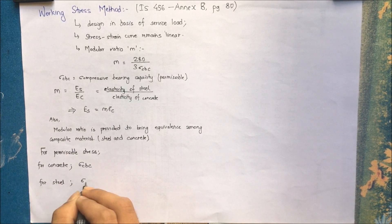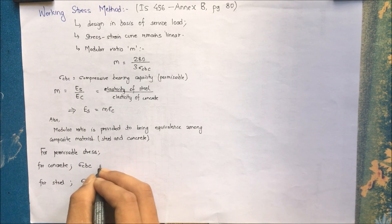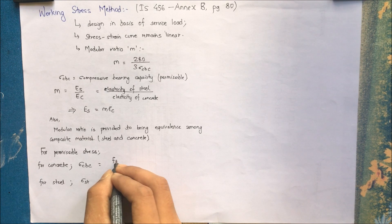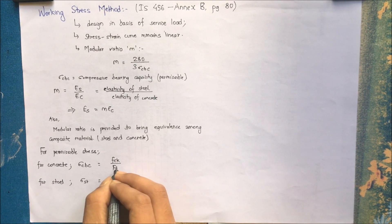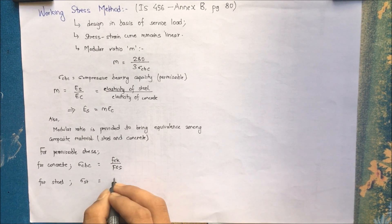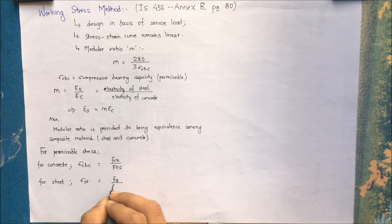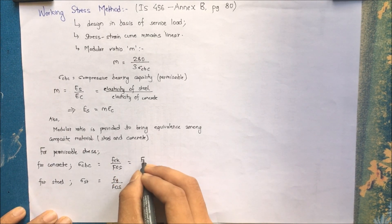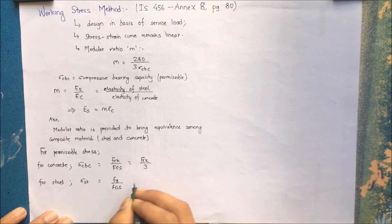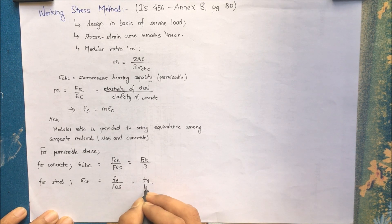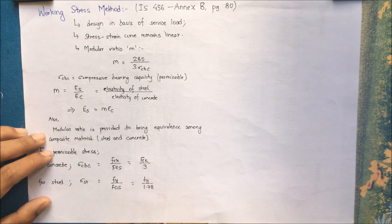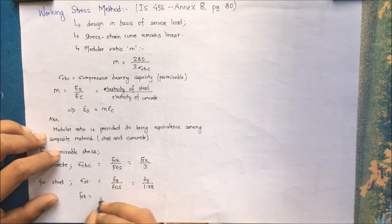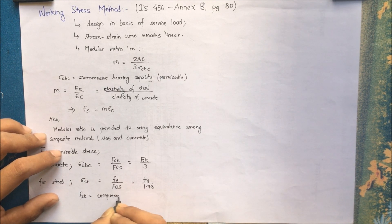Numerically, for permissible stress: Sigma CBC is for concrete, and Sigma ST is for steel. Sigma CBC equals FCK divided by the factor of safety, and Sigma ST equals FY divided by the factor of safety. The factor of safety is different for each material — 3 for concrete and 1.78 for steel. FCK is the characteristic strength of concrete and FY is the yield strength of steel.